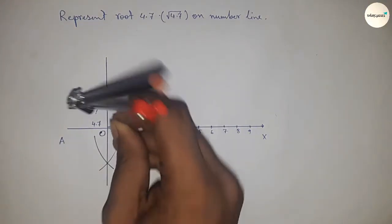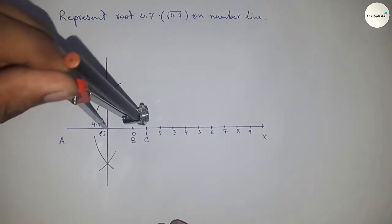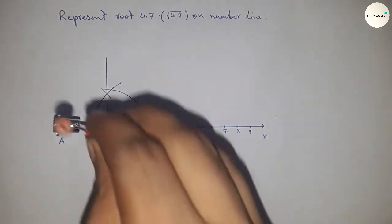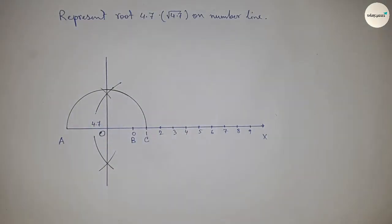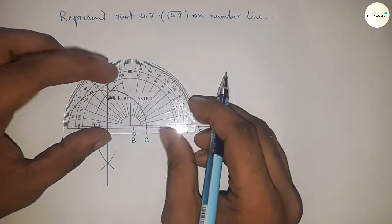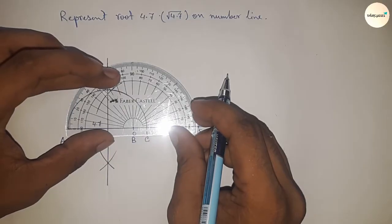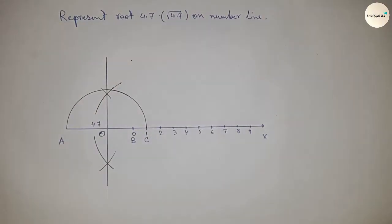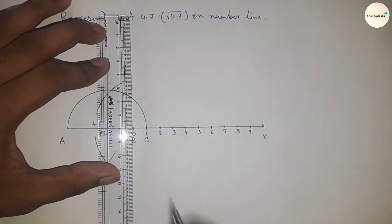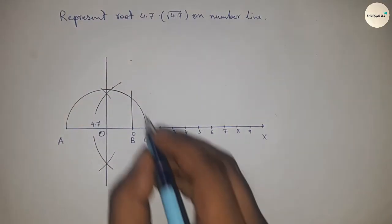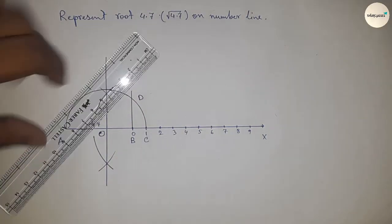Now draw a 90-degree angle at point B using a protractor. Join this line to the semicircle, which meets at point D. Next, join O and D.